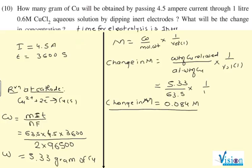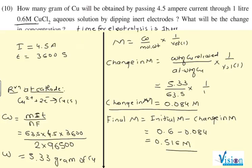So can I write 0.084? This is the change in molarity. Now what is final concentration? Final molarity equals to initial molarity minus change. Initial is 0.6 minus 0.084, so you will get 0.516 molarity. Is this understood?